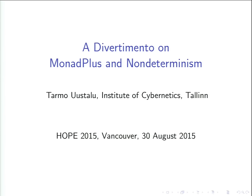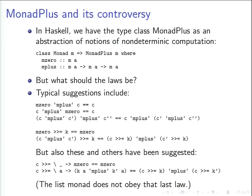This talk is supposed to be a lighter piece — Monoplus and non-determinism. In Haskell, we have this type class MonadPlus, which is meant to be an abstraction of notions of non-deterministic computations, with two member functions, M0 and plus. But what should the laws be? If you check Haskell mailing lists, the question pops up and is asked and answered, with controversial answers. There are suggestions for reforming MonadPlus, breaking it down into a whole class hierarchy, and discussions around MonadPlus versus Alternative.